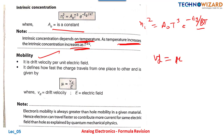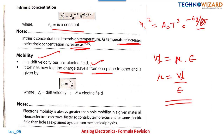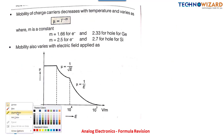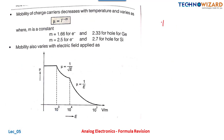What is mobility? Drift velocity is equal to the product of mobility and electric field. So mobility μ = vd / E — it is drift velocity per unit electric field. It defines how fast the charge travels from one place to another. Electron mobility is always greater than hole mobility, hence electrons travel faster and contribute more current for the same electric field compared to holes.